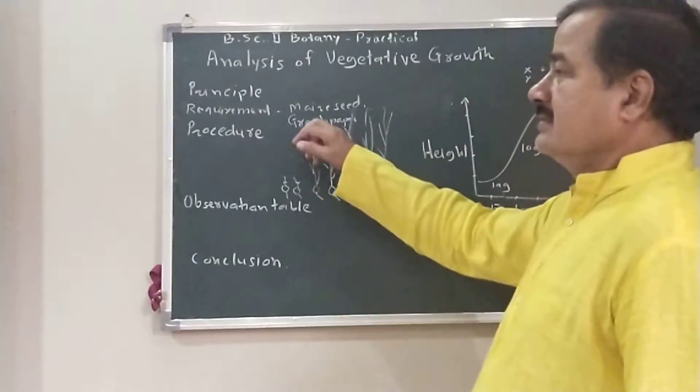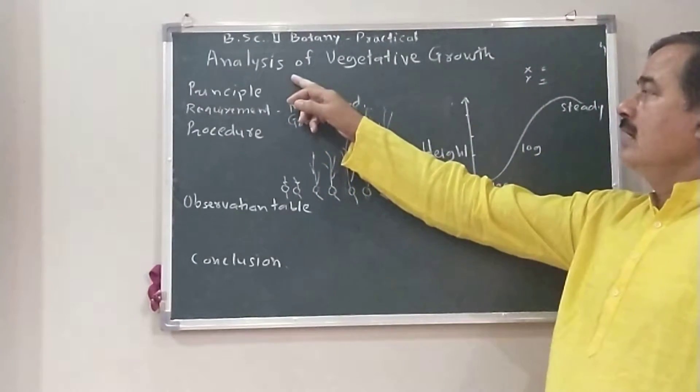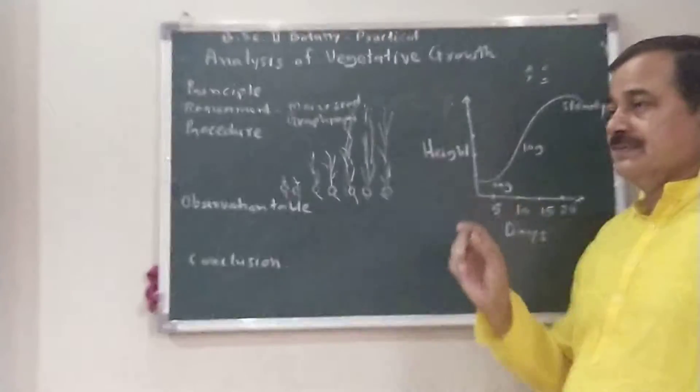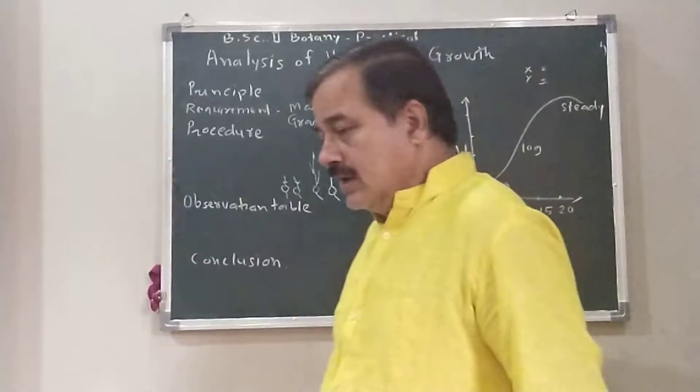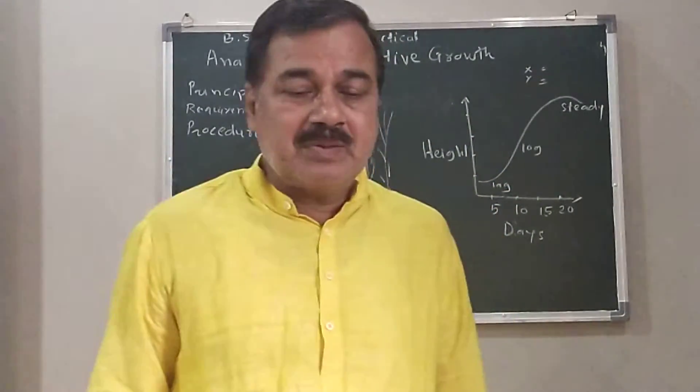We are going to discuss the new practical analysis of vegetative growth. Here, the vegetative growth - the root, stem, and leaves are the vegetative parts of the plant body.